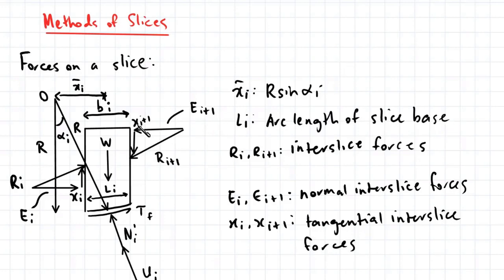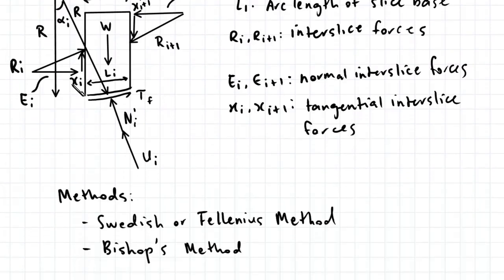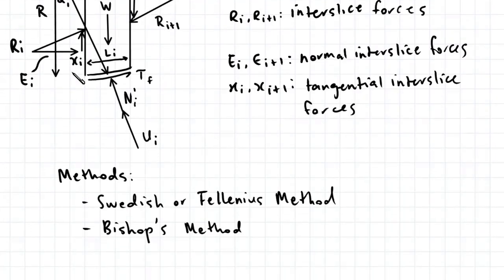All these terms have subscript i because they will all be different for each slice that you look at. There are also two main methods of slices: the first is the Swedish or Fellenius method, and the second is Bishop's method. I'll talk more about these two methods in detail in later videos.